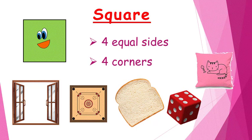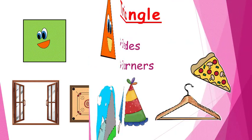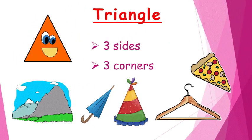Square has four equal sides and four corners. You can find the shape of a square in many things around you, like a window, a carom board, a slice of bread, a dice, a cushion, etc.